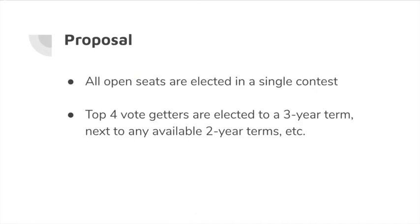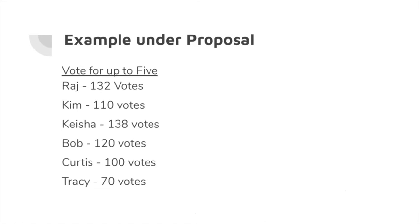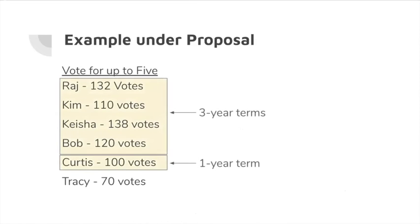So under this proposal, all open seats are elected in a single contest. There would be five slots, and the top four vote getters are elected to a three-year term, next any available two-year terms, and so forth. So let's go back to our example. Here's the final vote tally, and here's the result. Raj, Kim, Keisha, and Bob, who are the top four vote getters, get a three-year term, and Curtis, who is the fifth highest vote getter, gets a one-year term, and Tracy does not get on to town meeting.